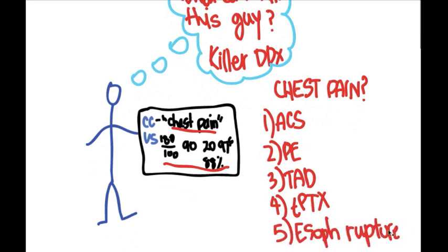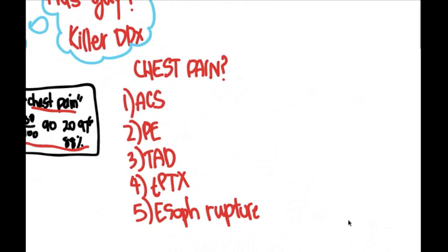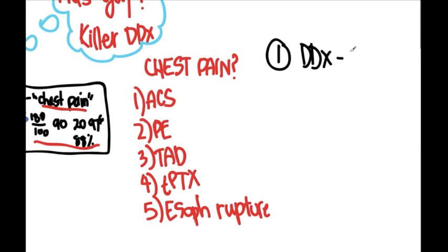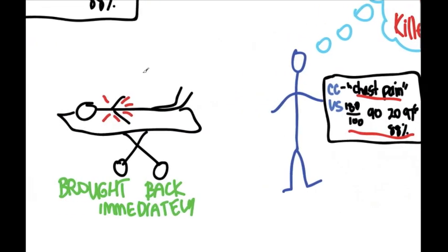There's actually a lot more than five things that could kill someone with chest pain, but for the sake of this example, let's limit it to these. So the first thing you should do in all patients in the emergency room is have a differential in mind which includes all the life threats. And this differential is based on the chief complaint. You can do this while you're walking towards the patient's room.